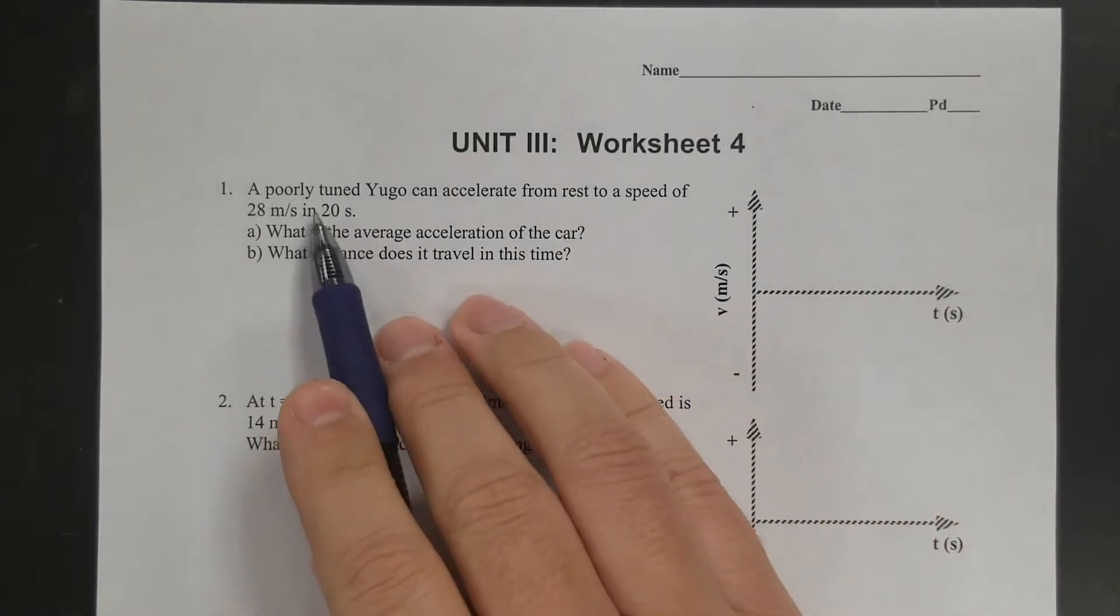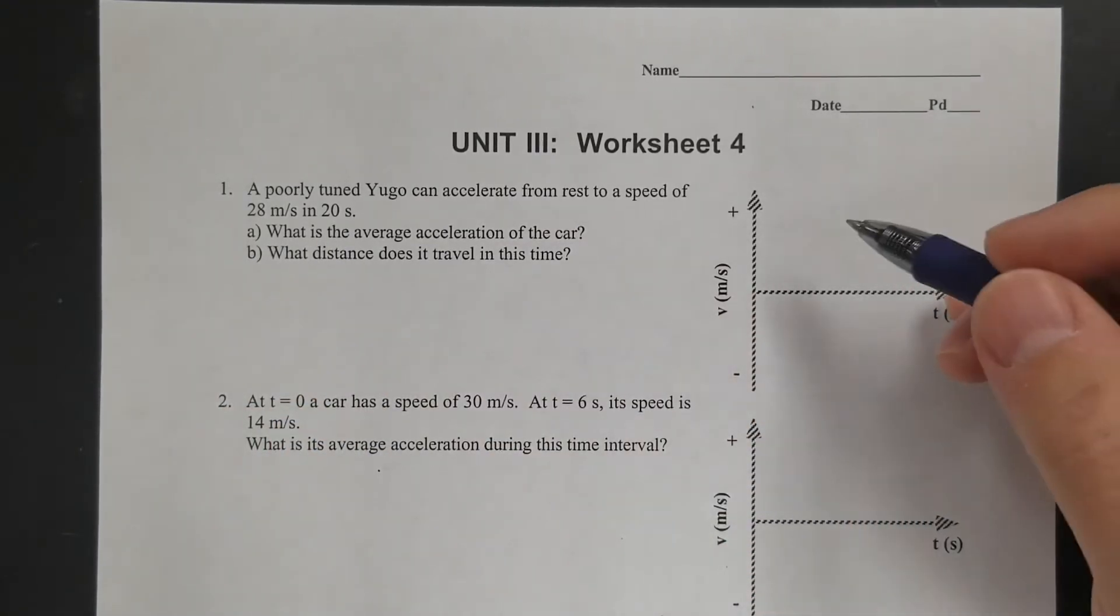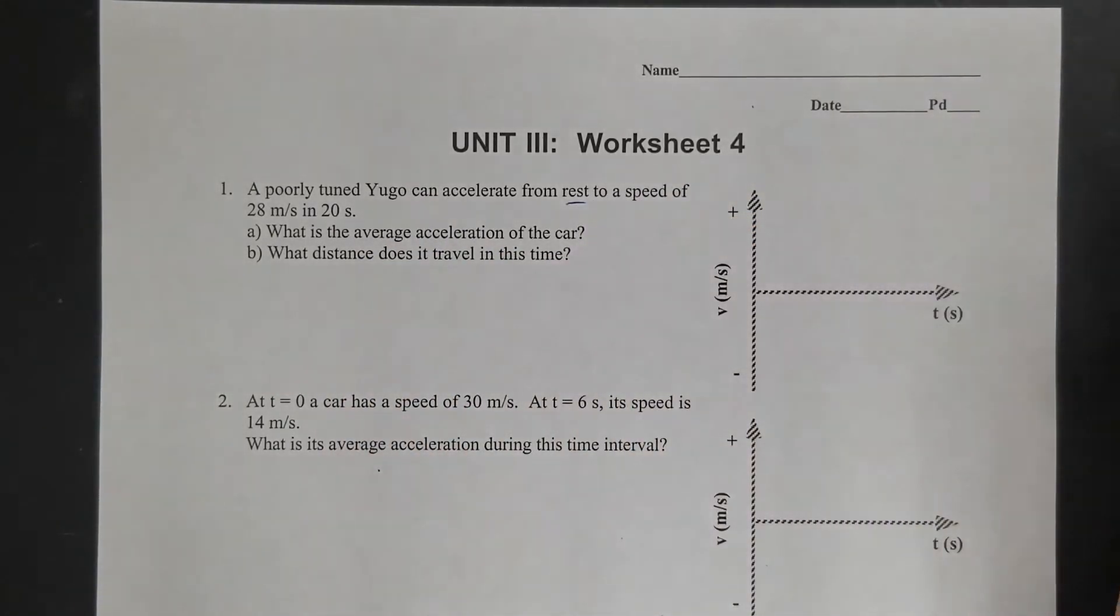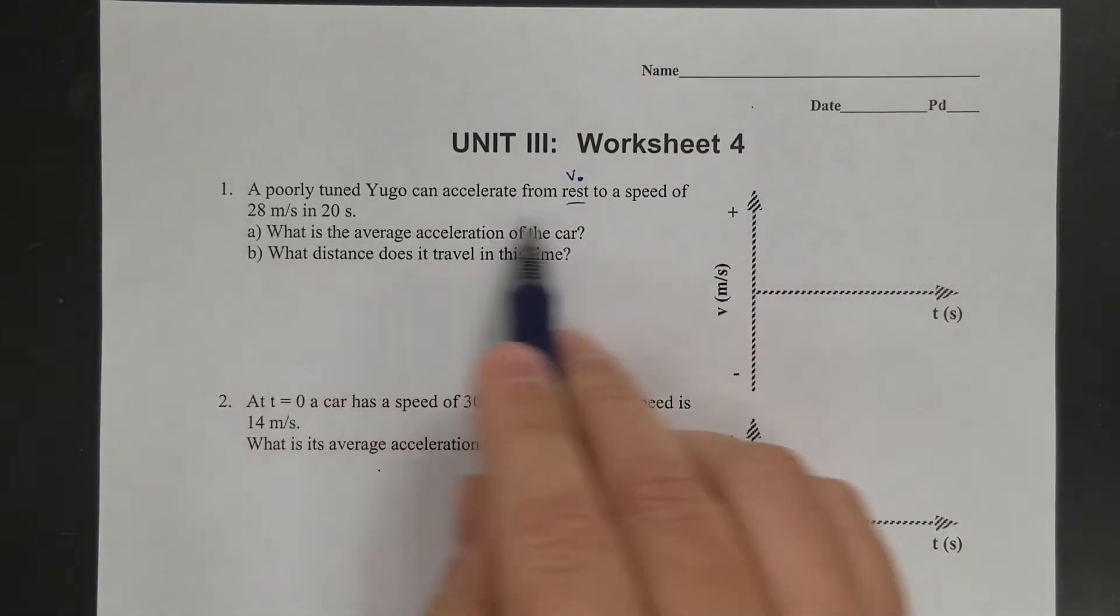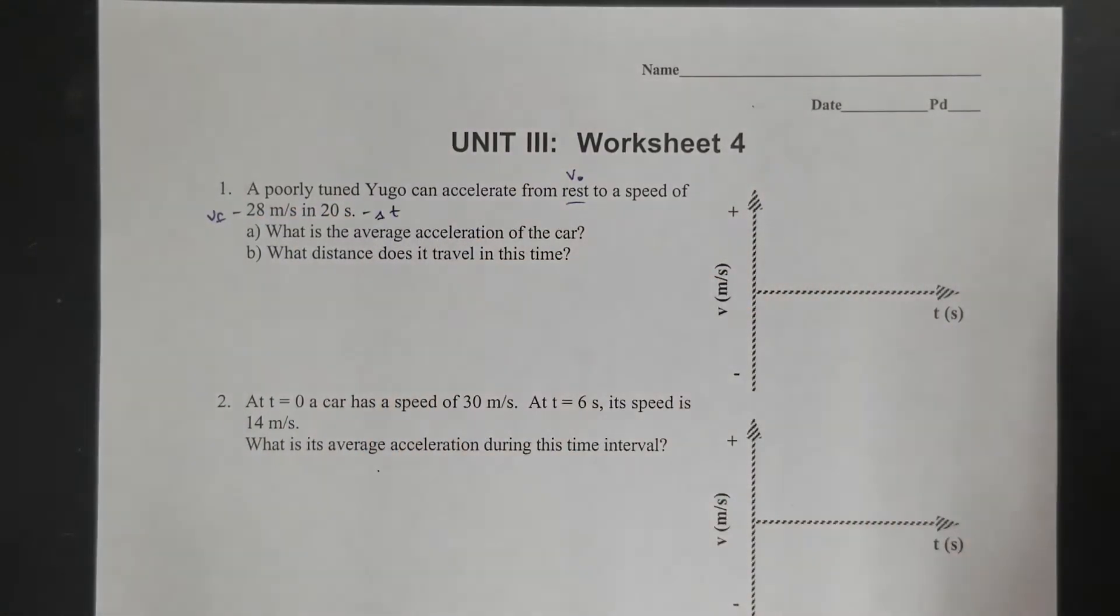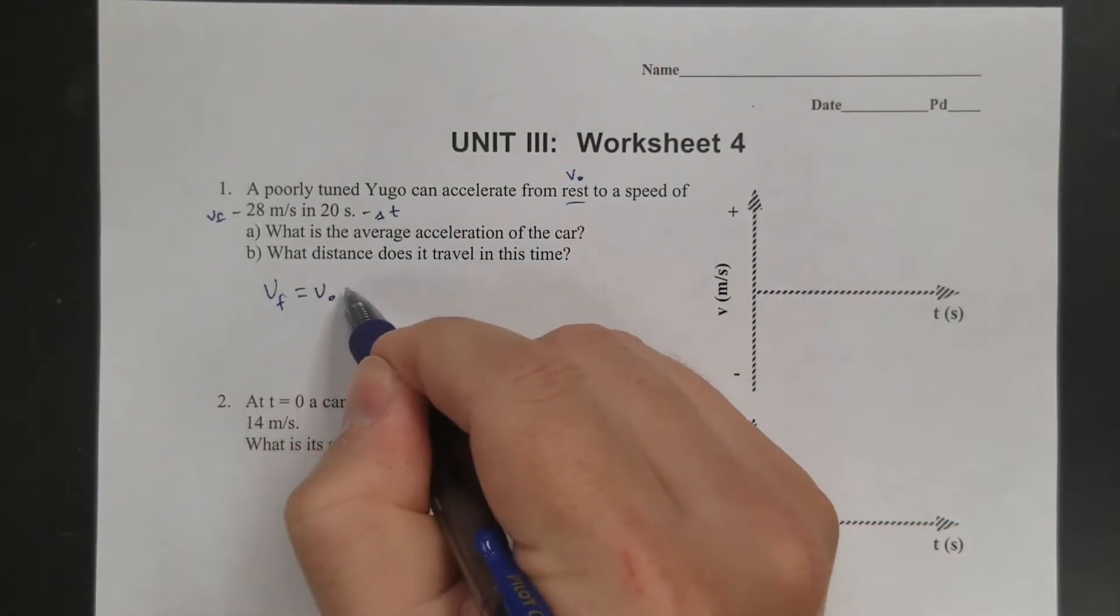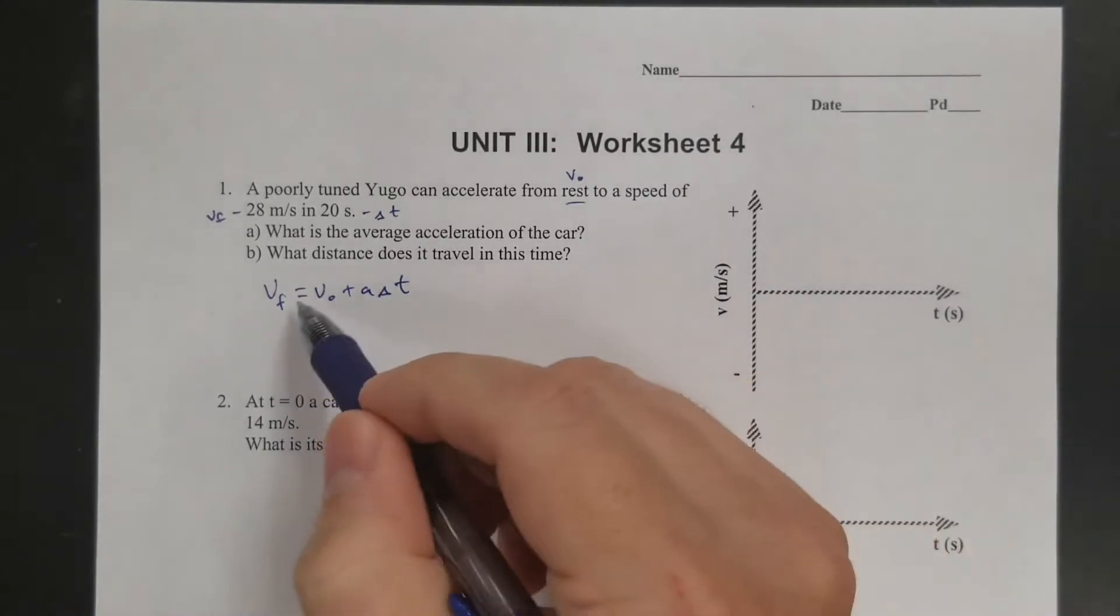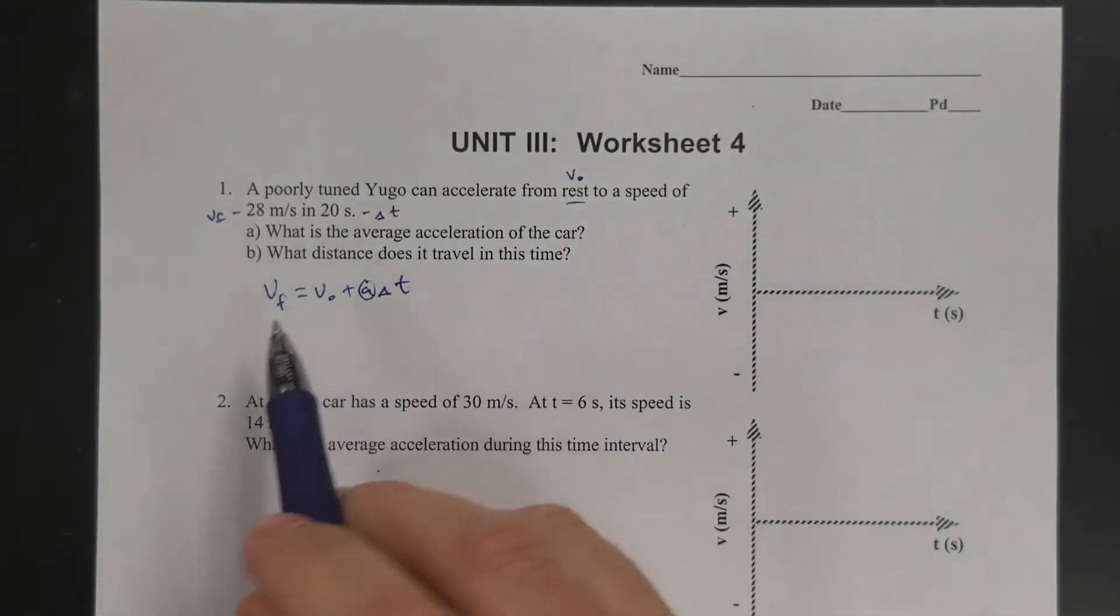So this first one, I have a poorly tuned Yugo can accelerate from rest to a speed of 28 meters per second in 20 seconds. The first thing you want to do is figure out what your variables are. If I see rest, that means 0 meters per second, so that's my initial velocity. And the 28 meters per second at the end, that's my final velocity. And 20 seconds is my time interval. So if I'm doing an equation, I know that I'm probably going to have to use this equation, the one that's basically the definition of acceleration. So if I use this equation, I could rearrange this to solve for A. I could plug in my final, initial, and time.